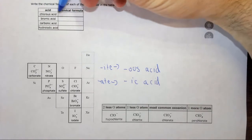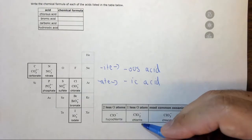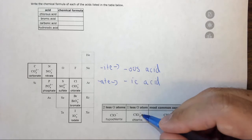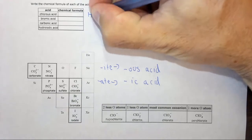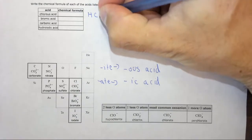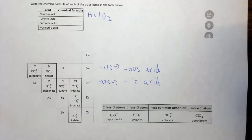So chlorous acid comes from chlorite. Since there is one negative charge, we need one H, one proton. HClO2, because it has to be overall neutral.